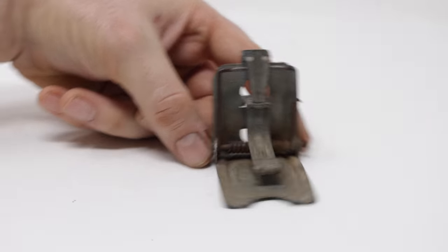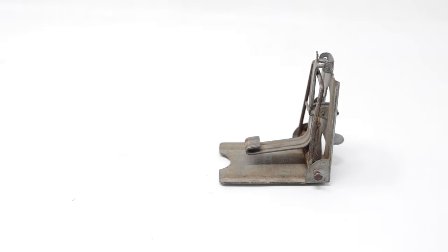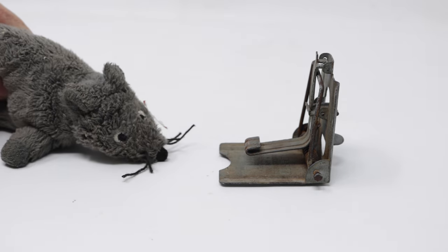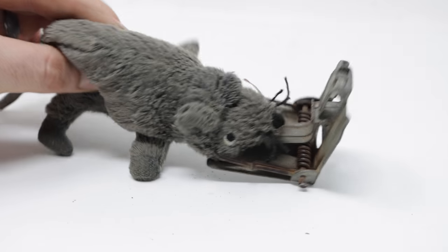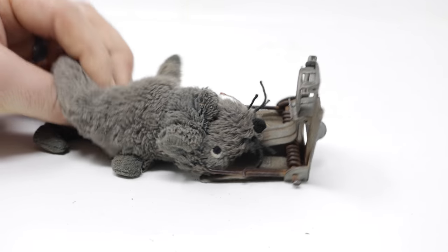Now, I'm curious how sensitive the trigger system is. We'll flip it around. The idea is a mouse will come along, try to get the bait, and when it does, bam, that kill bar comes right down on its head.